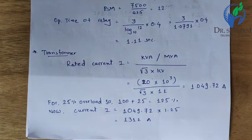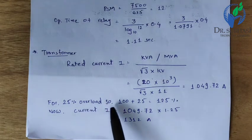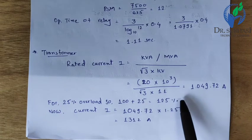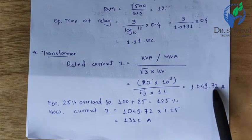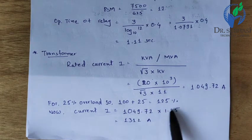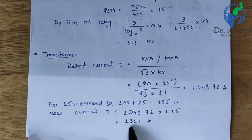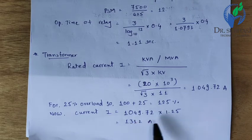With 25% overload, the transformer runs continuously at 125% of rated current. So the actual current is 1049.72 × 1.25 = 1312 A flowing from the transformer to the feeder.